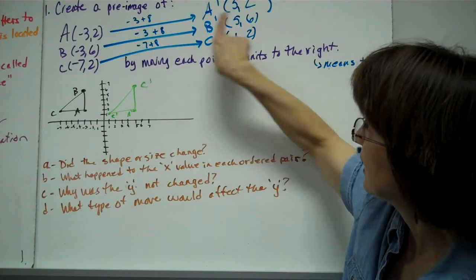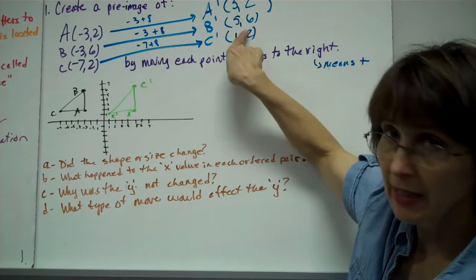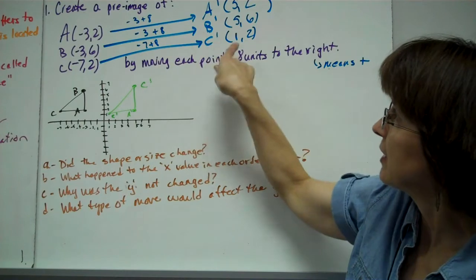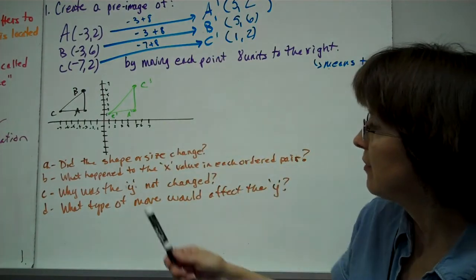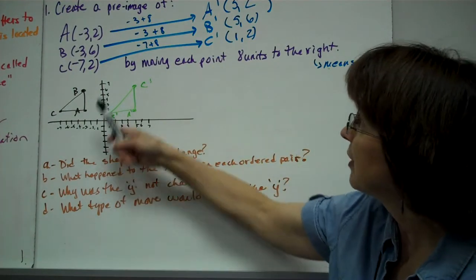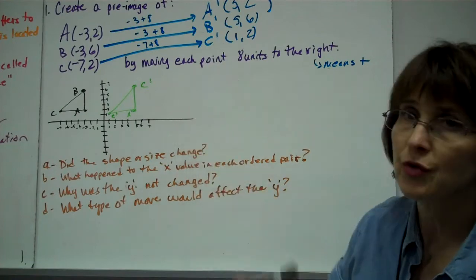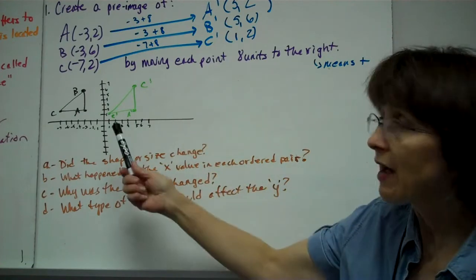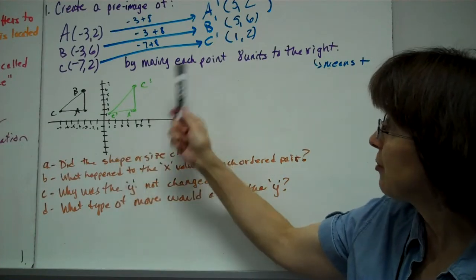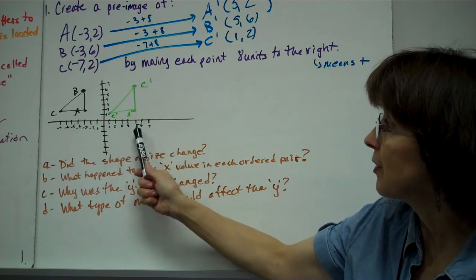We're just going to add eight to every x value. So it's going to be -3+8=5, -3+8=5, and -7+8=1. Then you simply leave the y values the same. The two stays there, the six, and then the two. Then you graph it and label it with A prime, B prime, C prime.